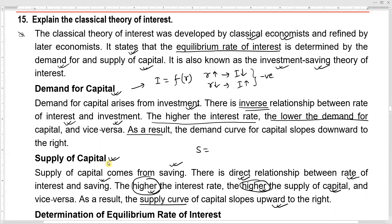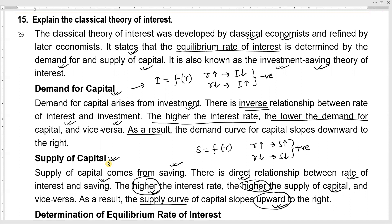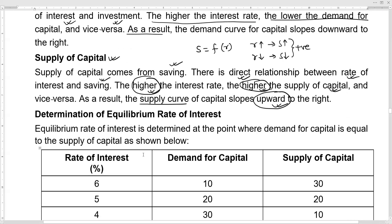The supply of capital depends on the rate of interest. The higher the rate of interest, the higher will be the saving; the lower the rate of interest, the lower will be the saving. This is a positive relation, so the supply curve is upward sloping.